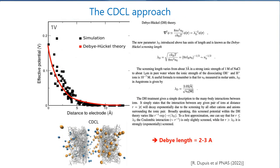Analyzing the potential created on the outside surface and the distribution of ions corresponds to the Debye-Hückel theory — a linear version of the Poisson-Boltzmann theory. The simulation fits pretty well the Debye-Hückel prediction. The Debye-Hückel equation contains the Debye screening length, which we evaluate to be between two and three angstroms — corresponding exactly to the concentration of ions between the electrodes. So we are doing well in terms of the electrical double layer.